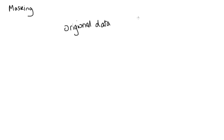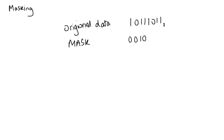Here's my original data: 1 0 1 1 1 0 1 1 1 1 0 1 1 in base 2, which is binary. My mask is 0 0 1 0 0 0 0 0 — the reason there's a 1 in the third most significant bit position is because that is the bit that we are trying to determine.